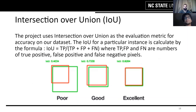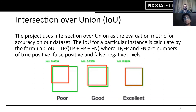Speaking qualitatively, IOU represents the overlap of our predicted mask over the ground truth mask. It is calculated using true positive, false positive, and false negative pixels and is used for the generation of our masks.